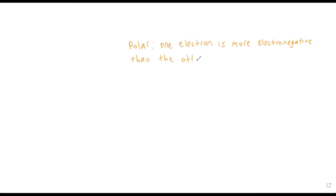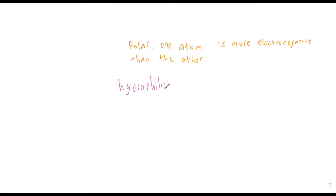With a polar covalent bond, yes the two atoms share electrons, but one keeps them for a longer period of time — because of that they have two slightly different charges. We call that a polar molecule, and we say these are hydrophilic because water is also a polar compound, so it can exist in water just fine. Hydrophilic means water-loving — it means that it can exist in water.